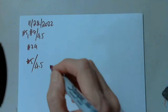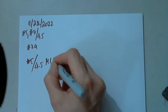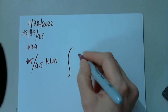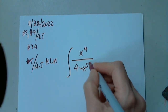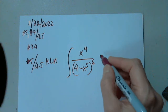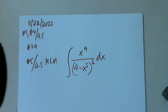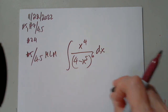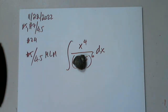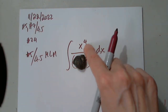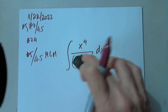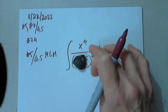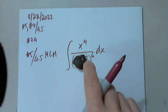From problem 4.5 in MLM, the integral of x to the fourth over 4 minus x to the fifth, everything to the sixth power, dx. This is my problem. There is nothing I can do to x to the fourth. There is nothing I can do to dx. So the integral has to have dx, and this is our function. So this is my issue.